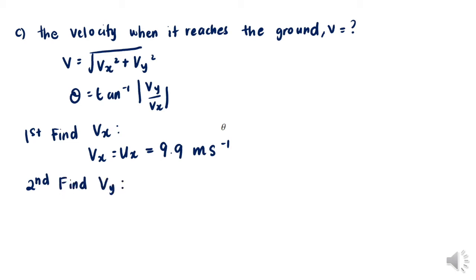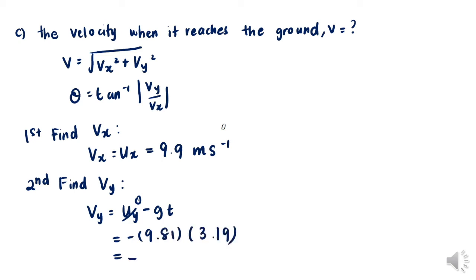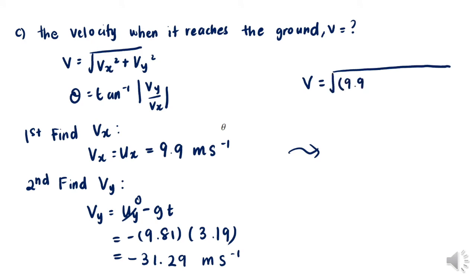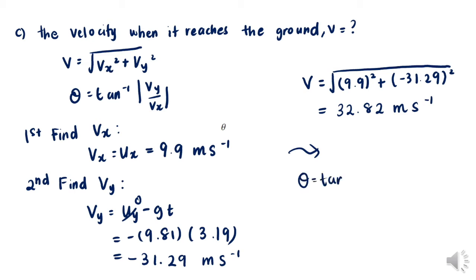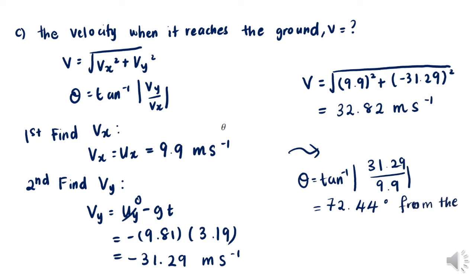Next, we find vy using vy equals uy minus g·t. Since uy equals zero, vy equals negative 9.81 times 3.19, giving vy equals negative 31.29 meters per second. Substituting into the magnitude equation gives v equals 32.82 meters per second, and the direction is 72.44 degrees from the positive x-axis.